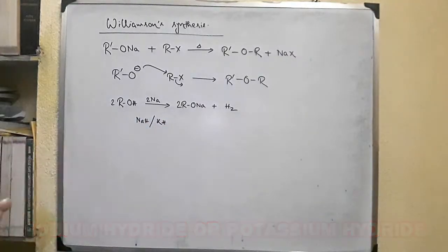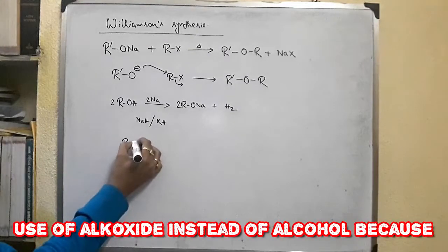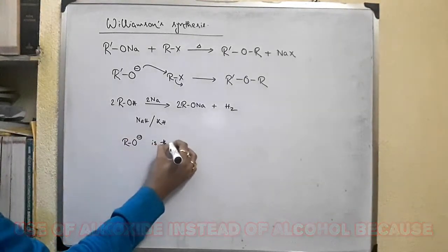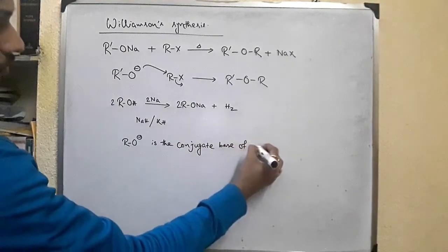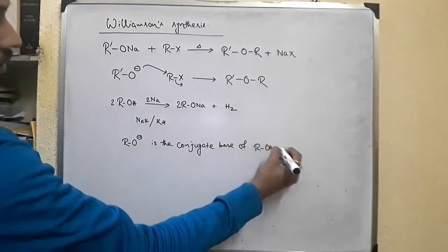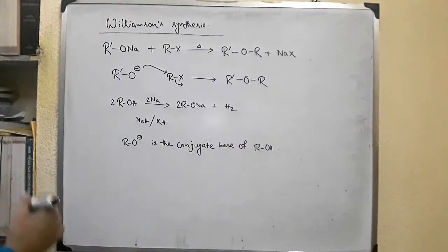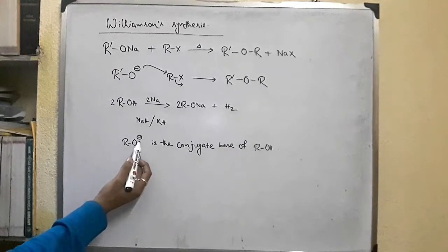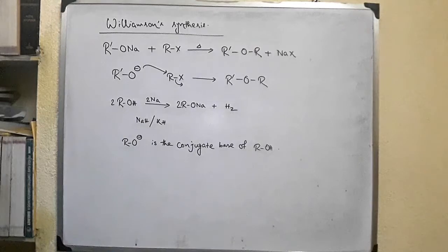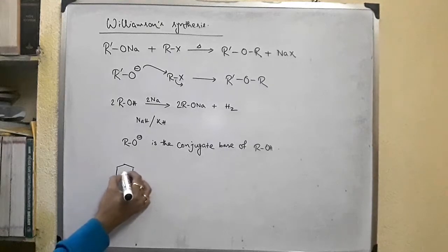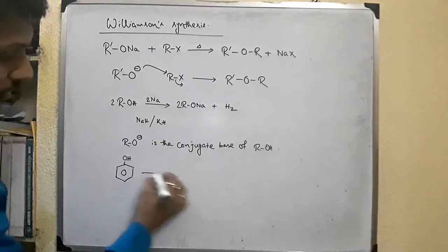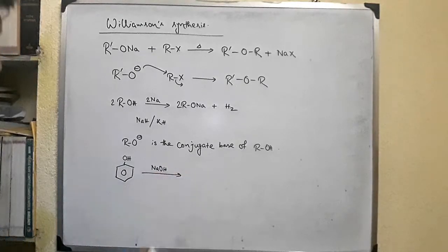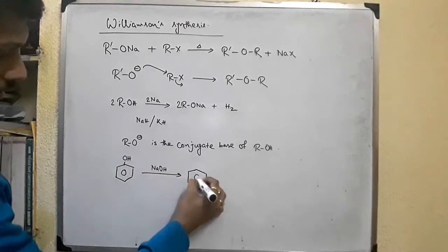The alkoxide is the conjugate base of the alcohol, and the conjugate base is always a better nucleophile because the electron density on oxygen is higher than in the alcohol, so the attack is faster. As phenols are more acidic than alcohols, phenols can be converted to phenoxide by treating with sodium hydroxide to give sodium phenoxide.